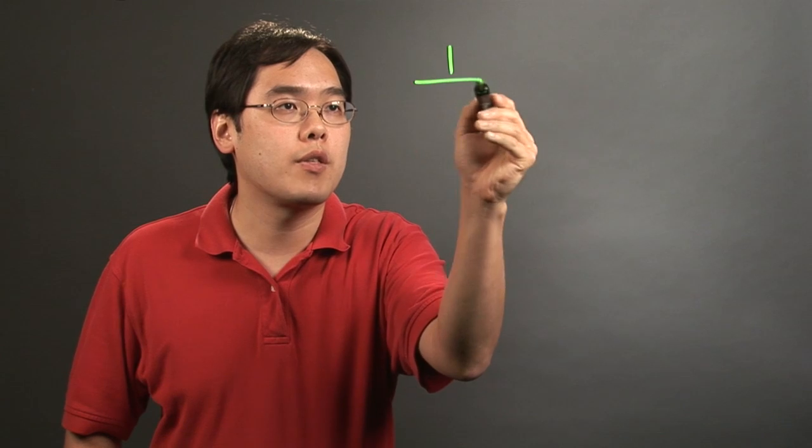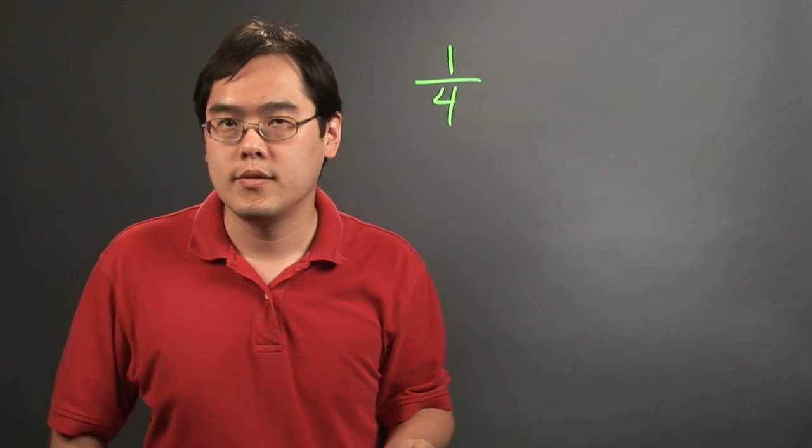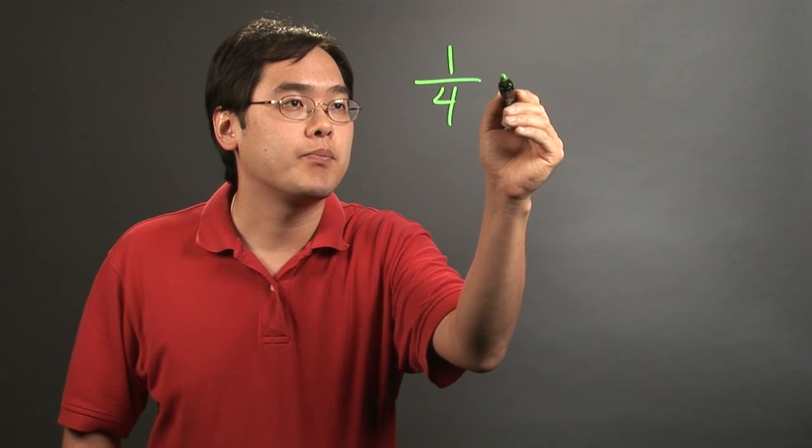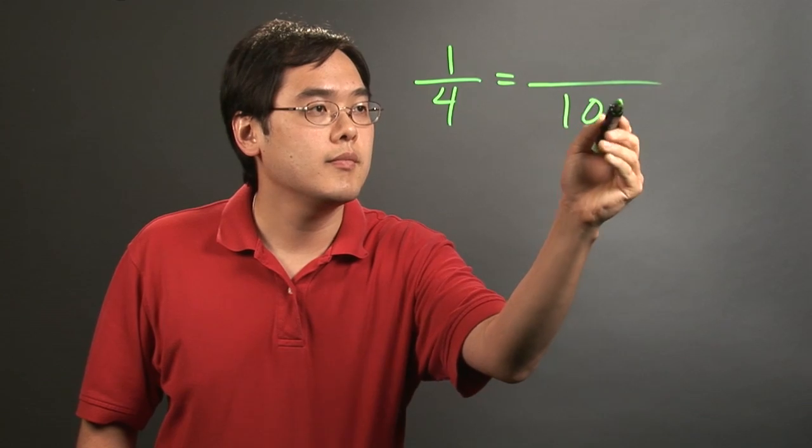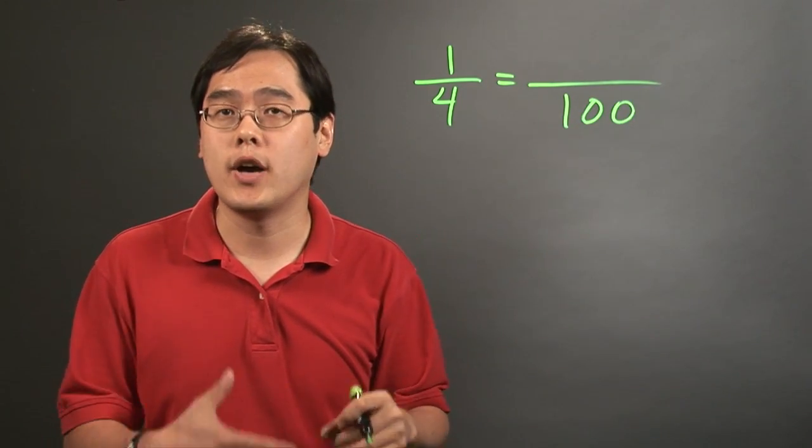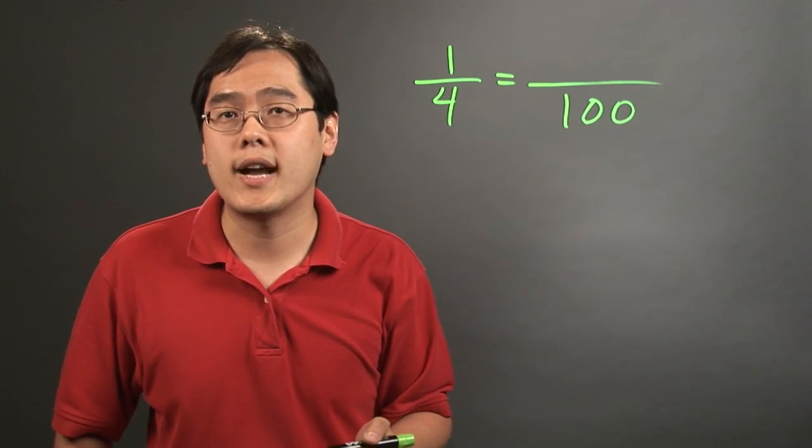For example, if you want to convert one-fourth to a percentage, there's one easy way to do it: what number is it out of a hundred? Because when it comes to percentages we think about a hundred percent, fifty percent, but one thing to think about is what is it out of a hundred.